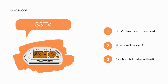How does it work? SSTV works by scanning an image line by line and converting it into an audio signal. I'm going to use a script to transform a picture into a WAV audio file, and the Flipper Zero is going to play it. The audio signal is then transmitted over the radio and received by another SSTV device, which converts the audio back into an image.